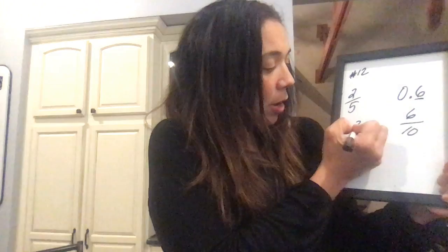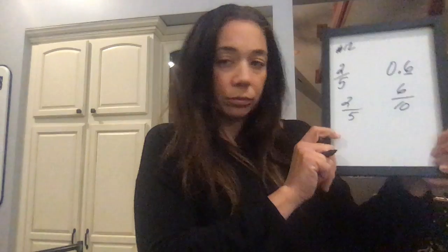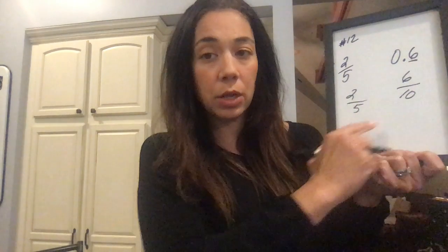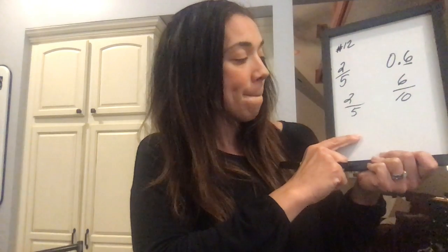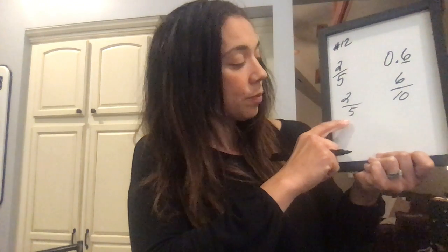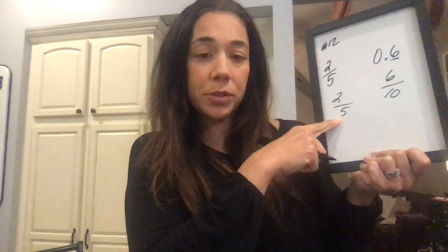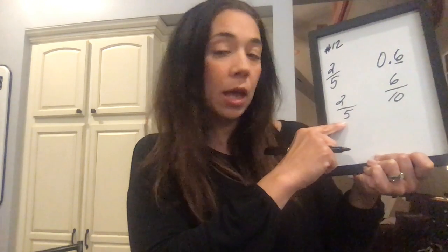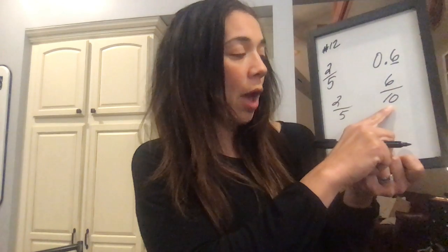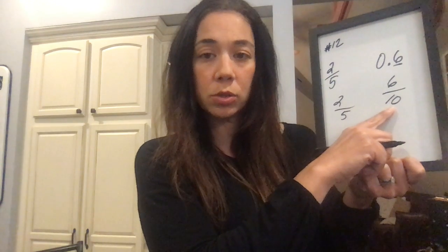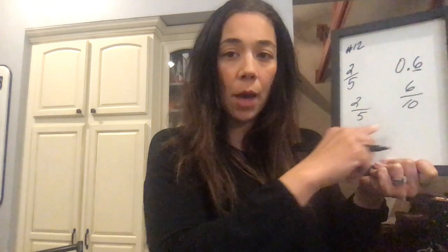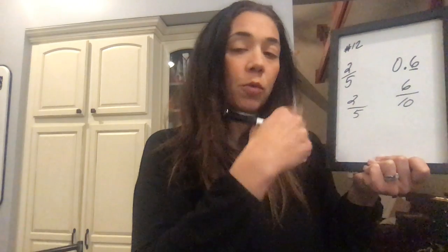So we're comparing 6 tenths to 2 fifths. As you notice, they do not have common denominators like we talked about in the last lesson, so we need to make them have common denominators. The multiples of 5 are 5, 10, 15, 20, 25, and the multiples of 10 are 10, 20, 30, 40. So the least common multiple is 10.